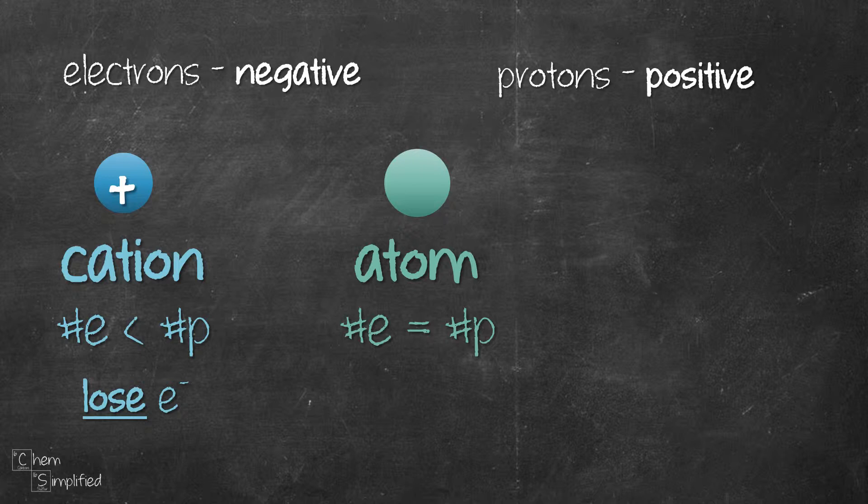If you start with a neutral atom where the number of electrons and protons are the same, after losing some of the electrons, the element will now have fewer electrons compared to protons, therefore making it positive.